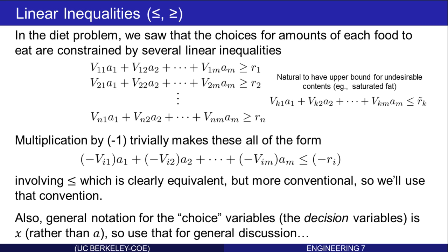The other convention that we'll use is that the general notation for the choice variables, the decision variables, will be x rather than a. A here was used because it represented an amount, and a is the first letter of the word amount. But in general, we'll use the letter x, x1, x2, up through xm, for decision variables. So from now on, when we're talking about a general discussion, letter x will represent decision variables.